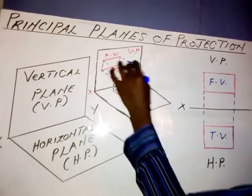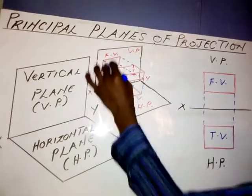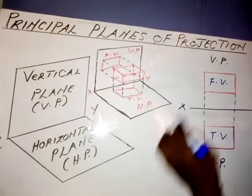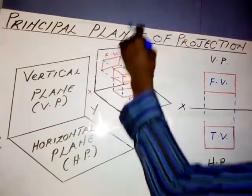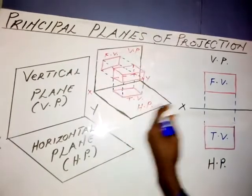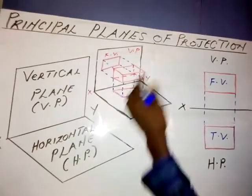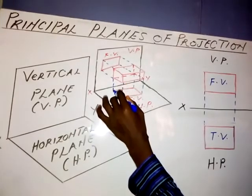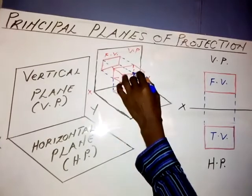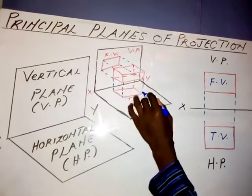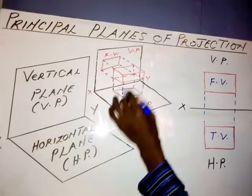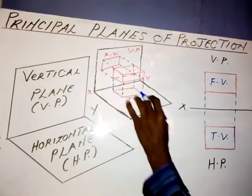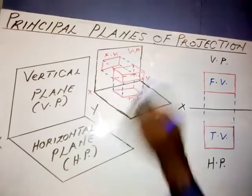By joining the ends of the projections together, I will have the front view of this object as a rectangle — as you can see on the board, this is the front view drawn on the vertical plane. Now to produce the top view or the plan, I project lines from each point down into the horizontal plane, and by joining the ends of the projectors together we have the plan or top view of the object.